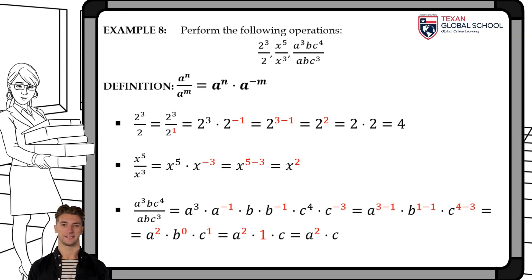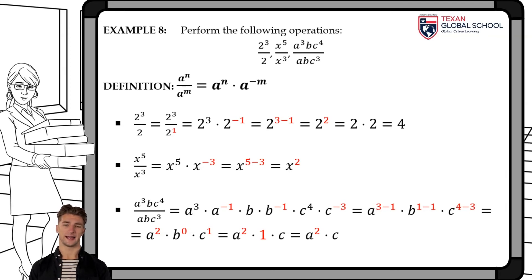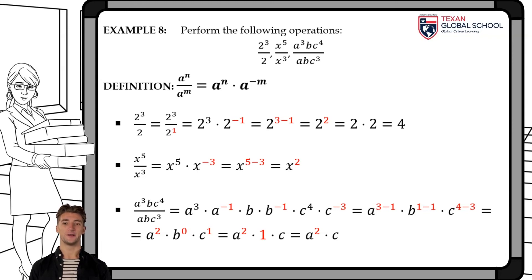However, the objective is to show that the formulas can be applied without altering the output. In the second example, x raised to the fifth over x cubed, using this law, can be represented as x to the fifth times x to the negative 3. Subtracting exponents, we obtain that the result is x squared.